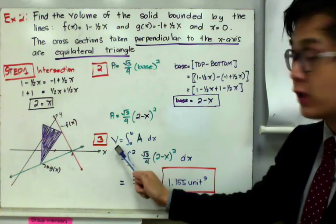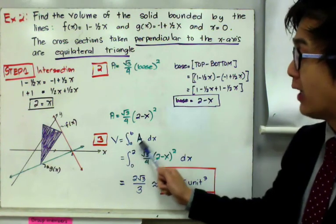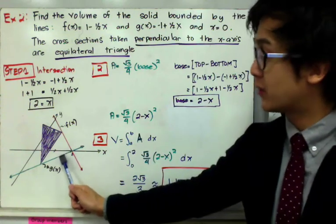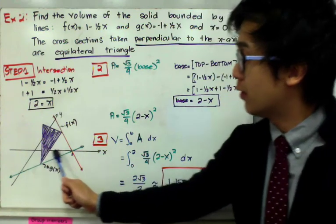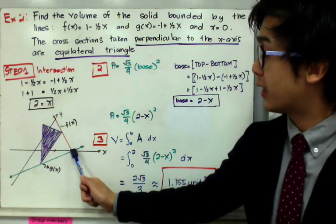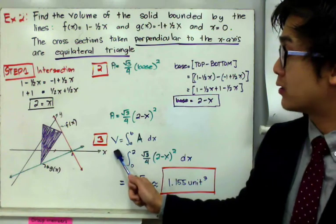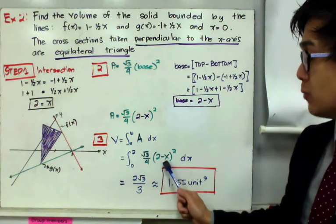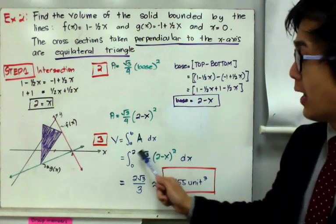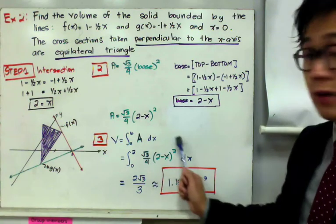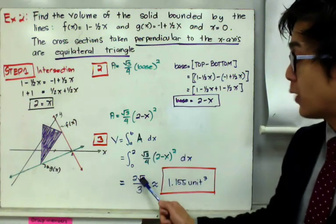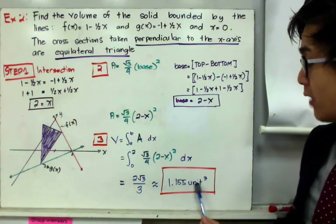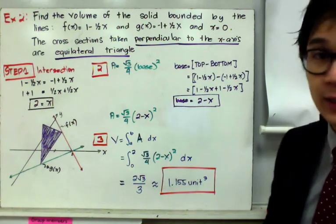To find the volume, we integrate the area from 0 to 2: V = ∫₀² (√3/4)(2 - x)² dx. Evaluating this integral gives 2√3/3, which is approximately equal to 1.155 cubic units. This completes the second example.